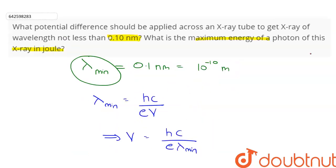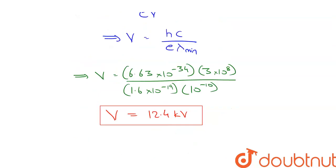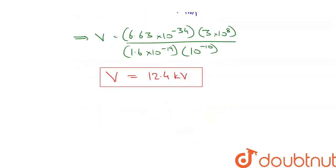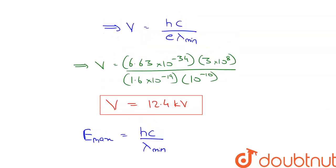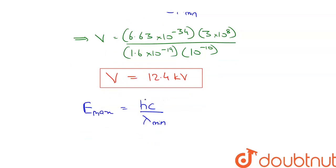Now we need to find the maximum energy of a photon of this X-ray in joule. The maximum energy E_max = hc / λ_min. The photon has maximum energy when all of the kinetic energy of the striking electron is converted to photon energy.